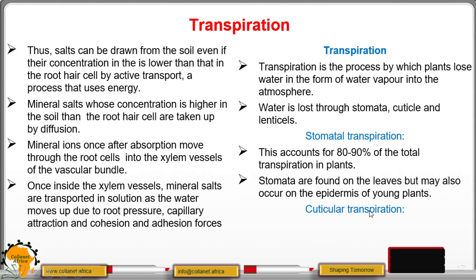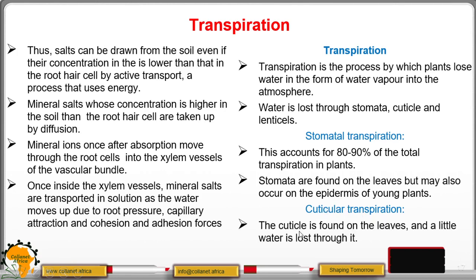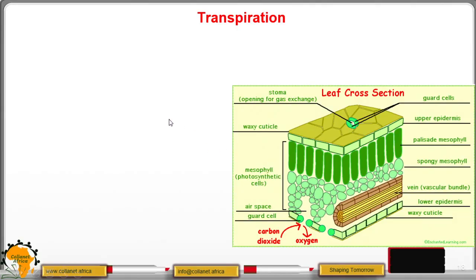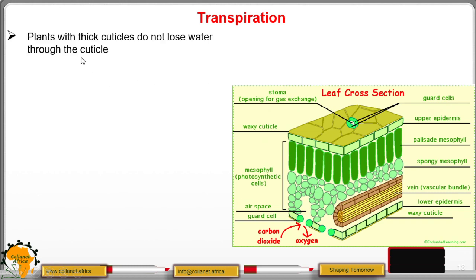Then we have cuticular transpiration. The cuticle is found on the leaves and little water is lost through it. The epidermis has guard cells which control the opening and closing of stomata so that gaseous exchange can take place as well as water loss through transpiration. Plants with thick cuticles do not lose water through the cuticle.